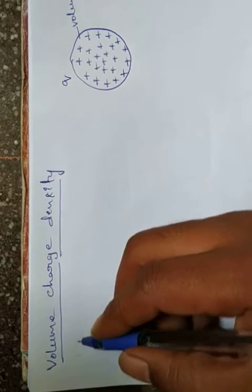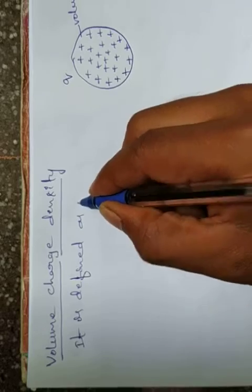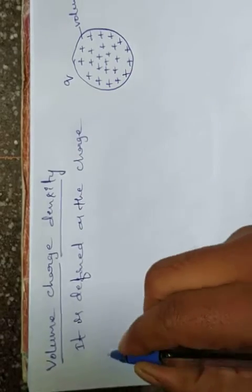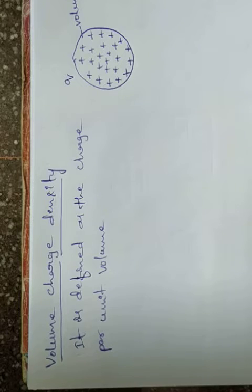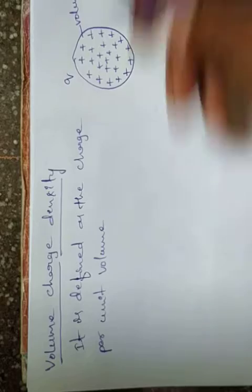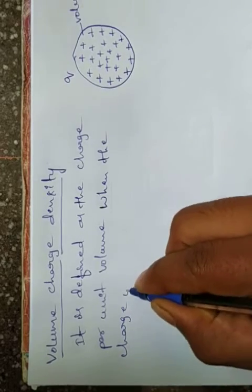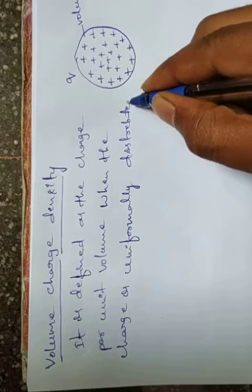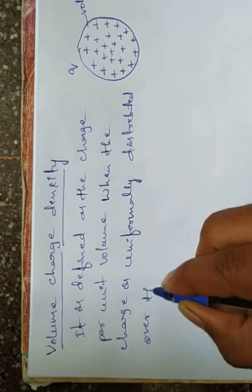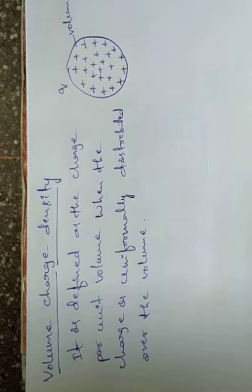Volume charge density is defined as charge per unit volume — just as linear charge density is charge per unit length, and surface charge density is charge per unit area. Volume charge density applies when the charge is uniformly distributed over the volume.